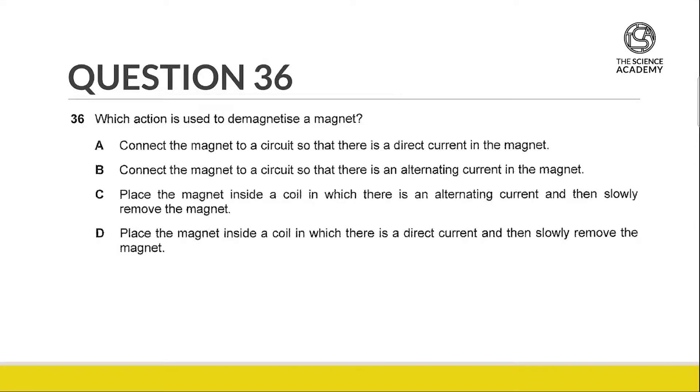For question 36, they ask us which action is used to demagnetize a magnet. There are mainly two main ways to demagnetize a magnet: hitting and heating.